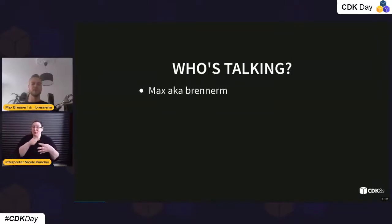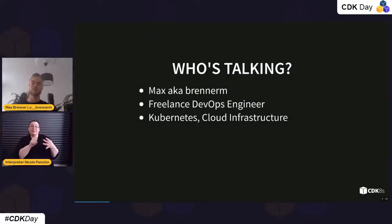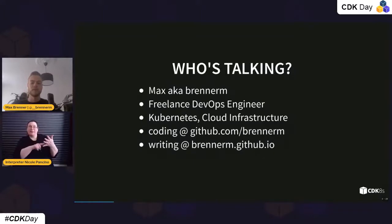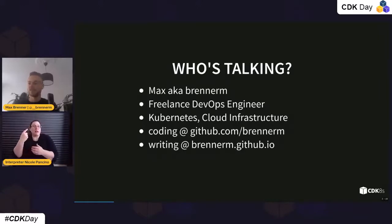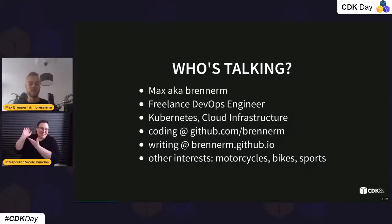My name is Max. On the internet you'll find me under my nickname Brenner M. I'm a freelance DevOps engineer mainly focusing on Kubernetes and cloud infrastructure — right now that's AWS. You can find me coding on GitHub and writing on my blog. I wrote a blog post roughly a year ago about CDKs, which is one of the main reasons I'm here today — I revisited it this year for this talk.